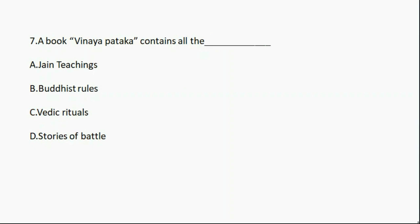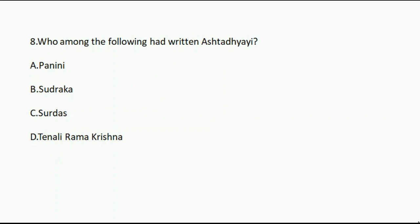Moving to the seventh question: The book Vinaya Pitaka contains all the — option A: Jain teachings. Option B: Buddhist rules. Option C: Vedic rituals. Option D: stories of battle. And the correct answer is option B, Buddhist rules.